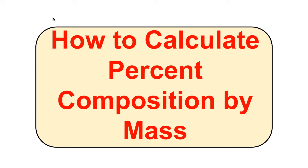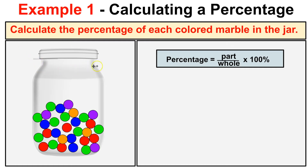Hey guys, this is Mr. Millings and in this video we are going to learn how to calculate the percent composition by mass of different compounds and molecules. Before we get started doing that, we must first learn how to calculate a percentage. To calculate a percentage, if you remember from your math class, it's simple: take the part divided by the whole times 100 percent.